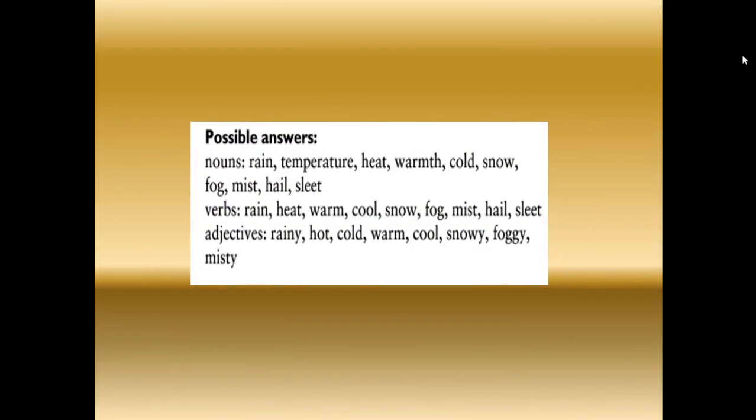Now I want to show you the possible answers of the previous table. Under nouns: rain, temperature, heat, warmth, cold, snow, fog, mist, hail, and sleet. Verbs: rain, heat, warm, cool, snow, fog, mist, hail, sleet. And finally adjectives: rainy, hot, cold, warm, cool, snowy, foggy, and misty. All of these words are adjectives relating to weather and climate.